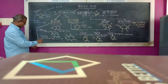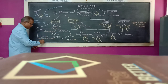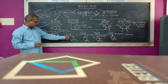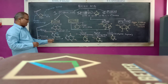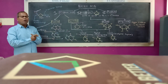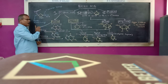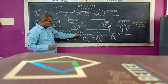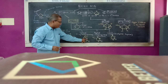In guanine, oxygen is present at the 6th position. Adenine is 6-aminopurine. Cytosine is also known as 2-oxypyrimidine, with oxygen at the second position.